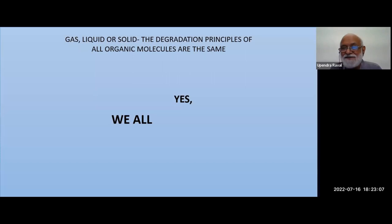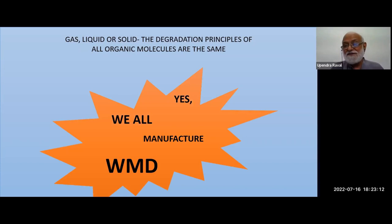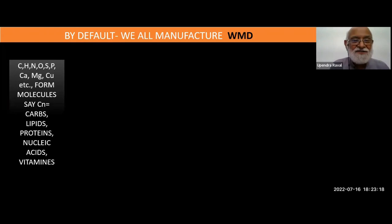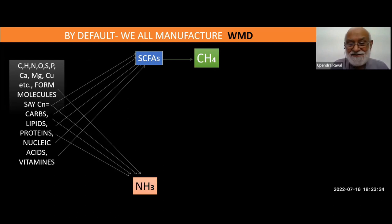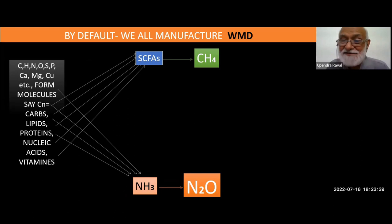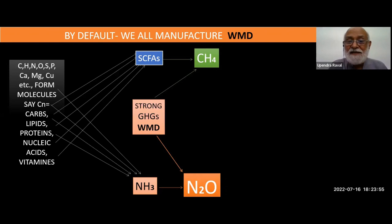Be it solid or gaseous waste — we all manufacture weapons of mass destruction. All carbon, nitrogen, hydrogen, etc. From carbs, lipids and proteins, we have short-chain fatty acids, which give us methane. Nitrogen-containing sources give us ammonia, which later gives us nitrous oxide. CH4 is 25 to 30 times more potent as a greenhouse gas than CO2, and nitrous oxide is 300 times more potent than CO2.